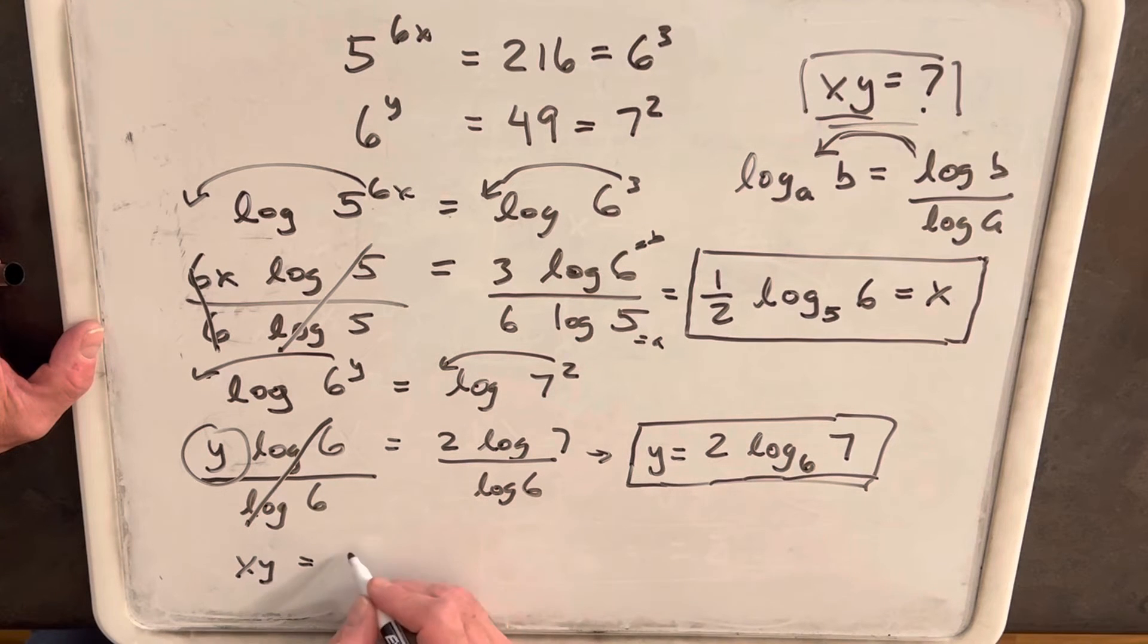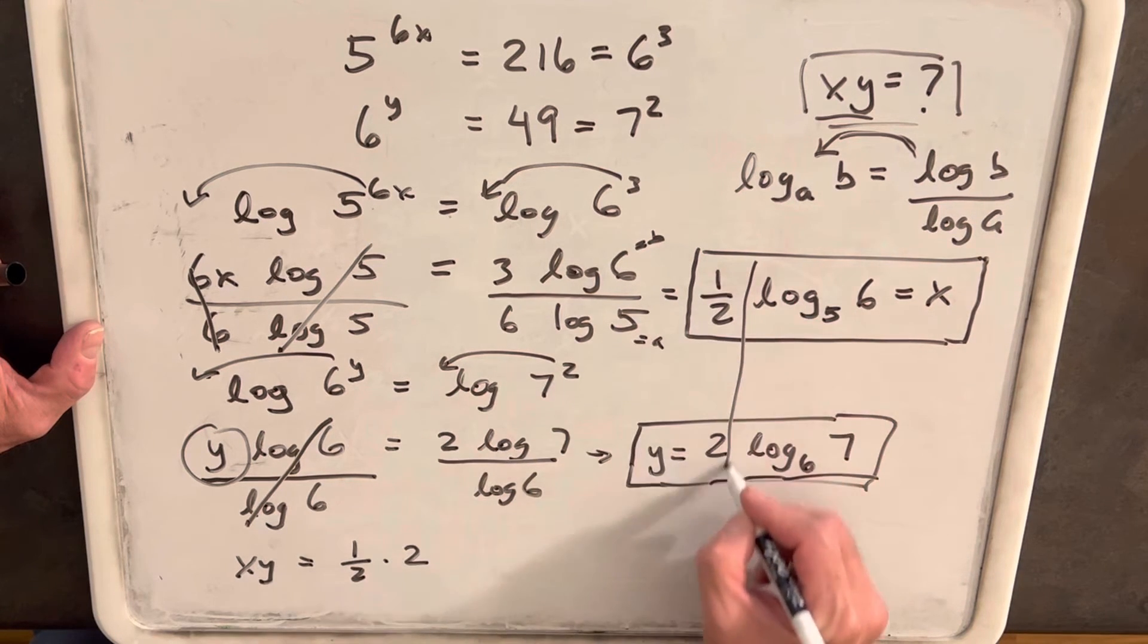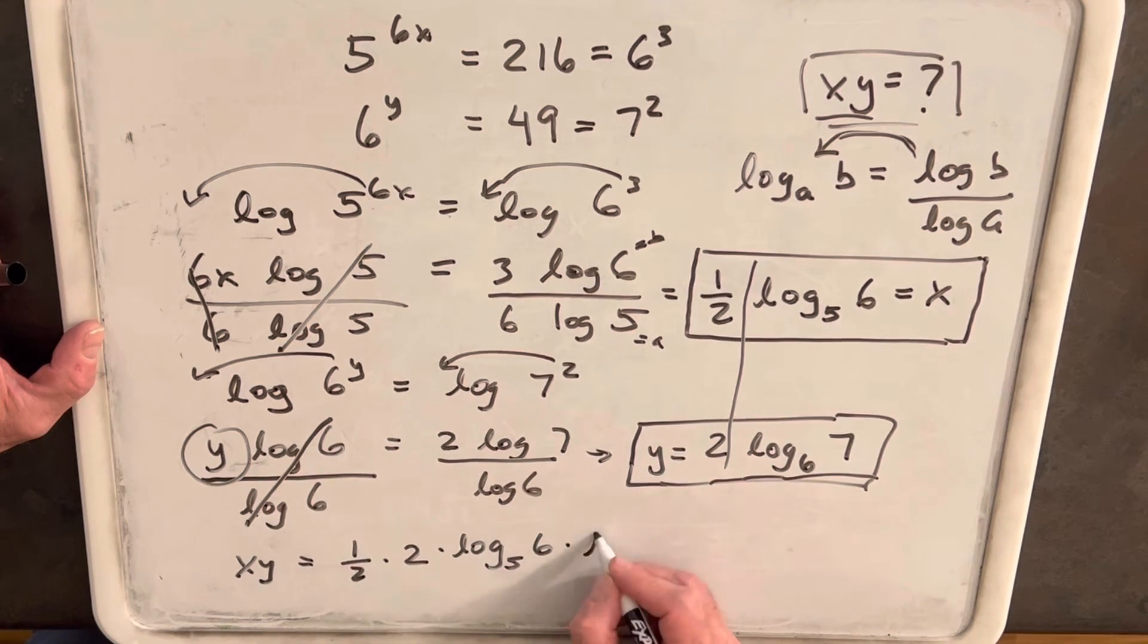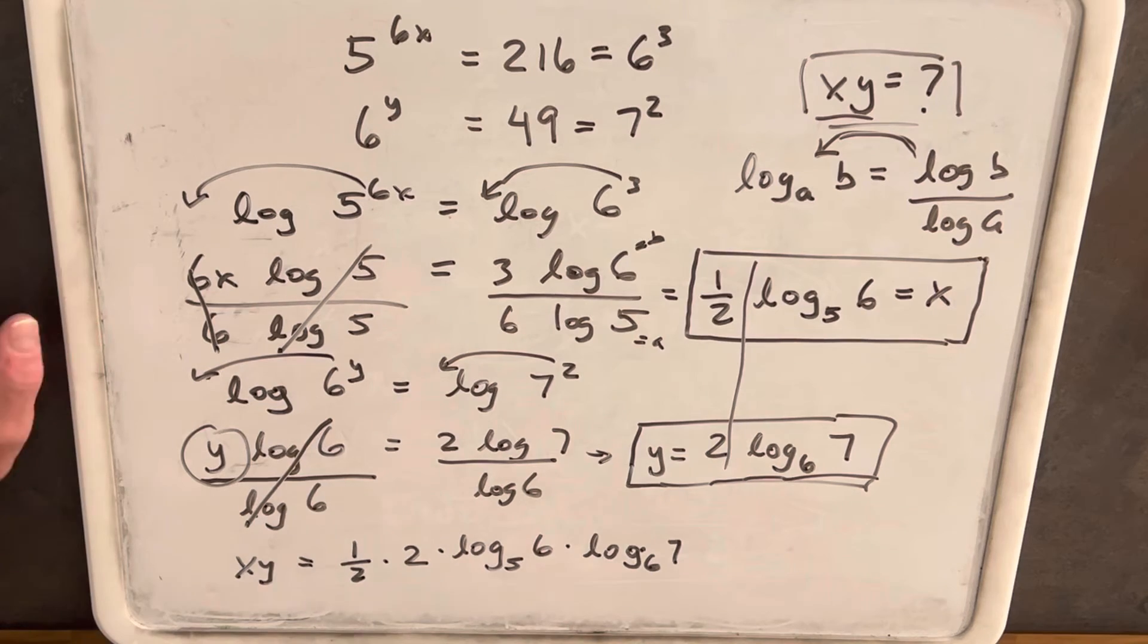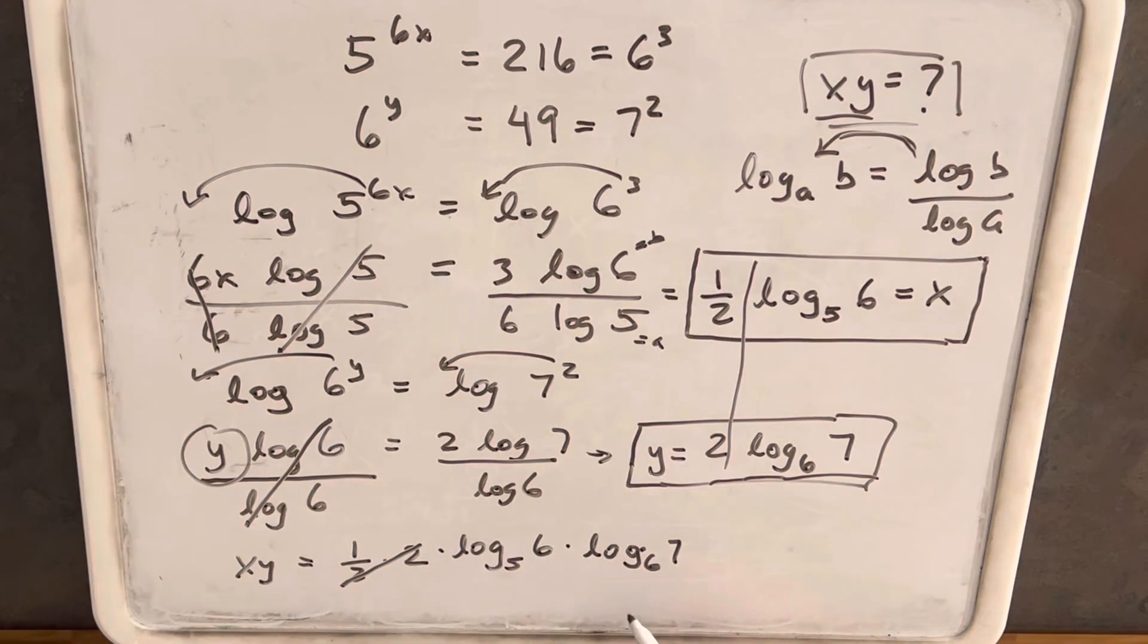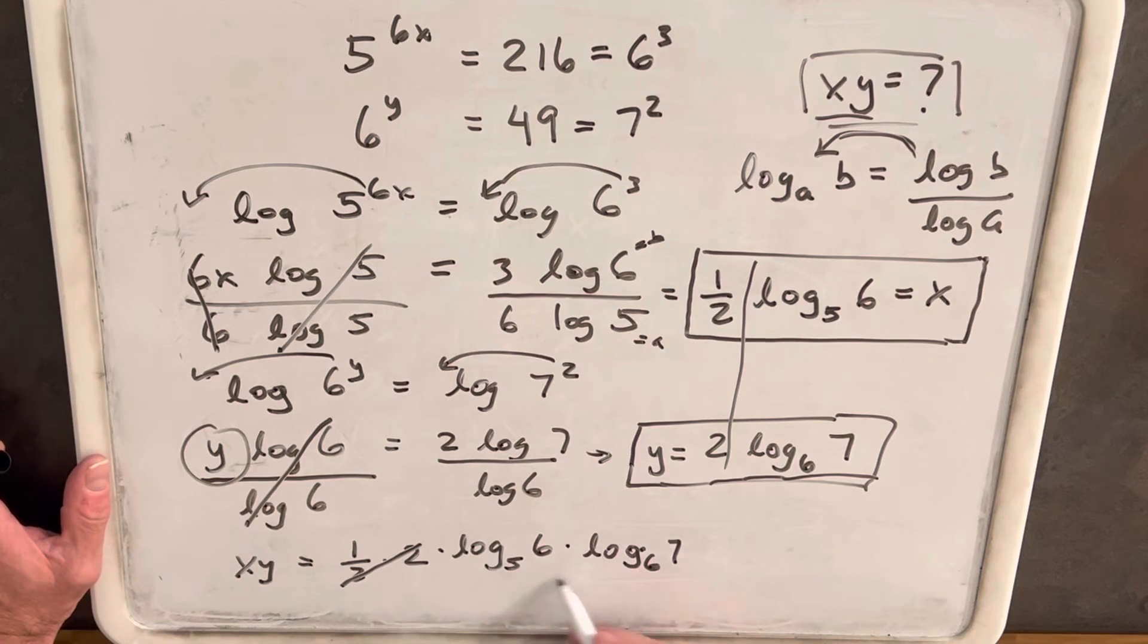We'll have, okay, 1 half. I'm going to bring the coefficients to the front. So we'll have, we'll do 1 half times 2, and we'll have log 5, 6, times, everything's just multiplied together, log base 6, 7. 2 and 1 half is going to cancel and just be 1. And so we're just left with these two logs here.